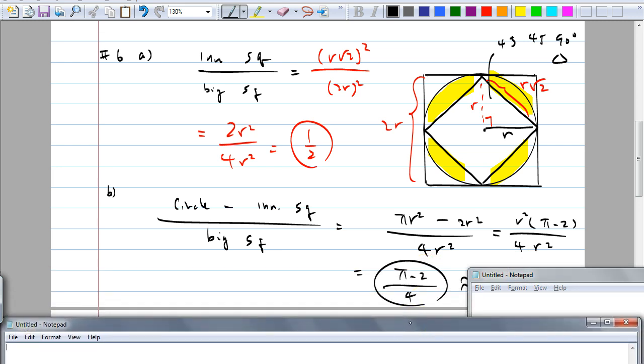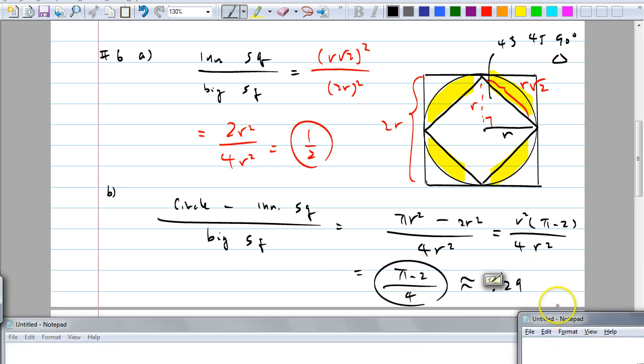Now, if you have a calculator, you can punch it in. It comes about 0.29 is your answer. So if you were to round the nearest hundredths, that's what you get. So on the test, you just leave it as π minus 2 over 4. That's fine. Okay, you don't have to punch it in. Okay, any question? Because I want an exact answer. Any question on this? Okay.